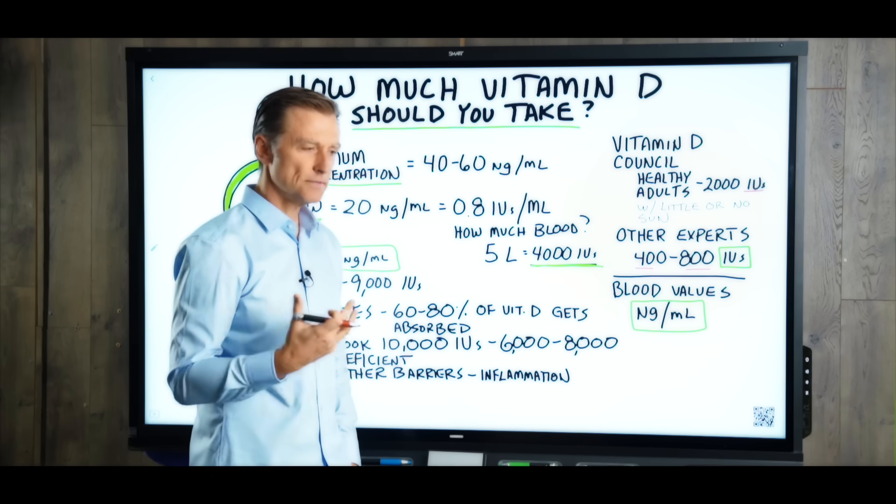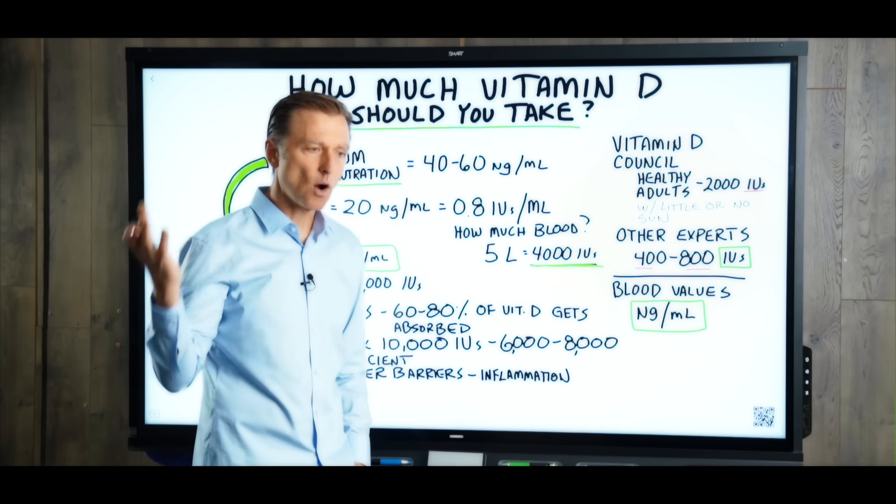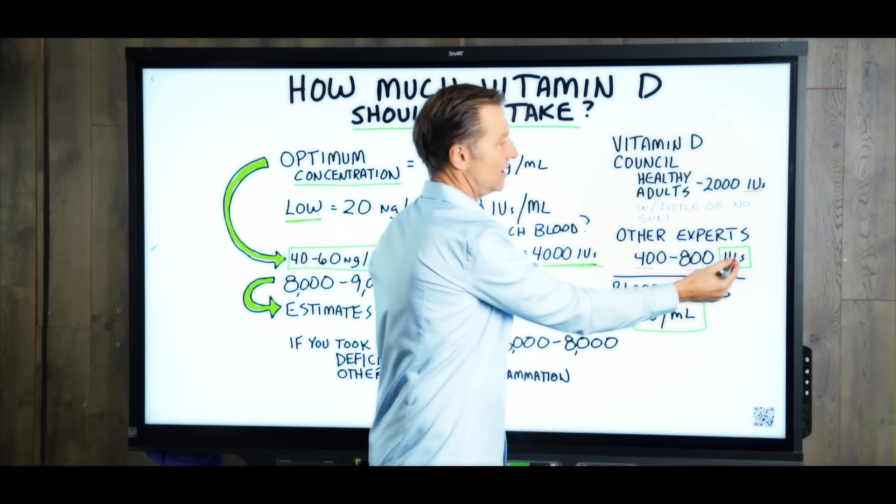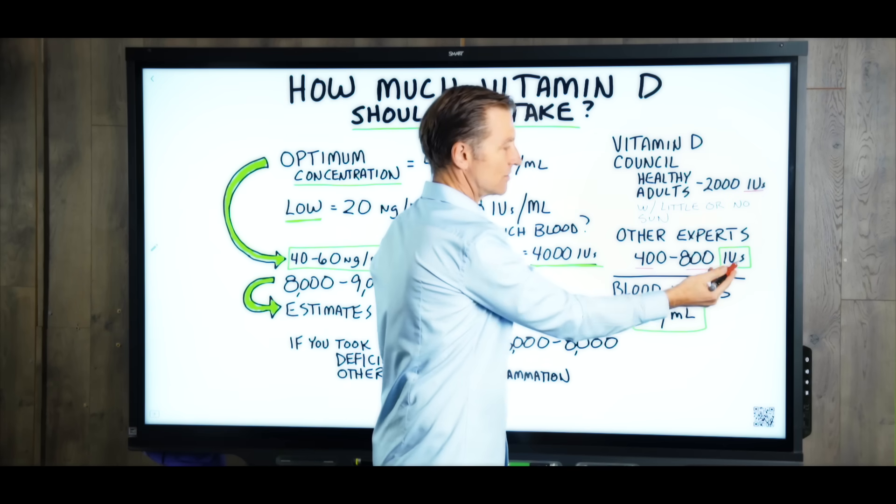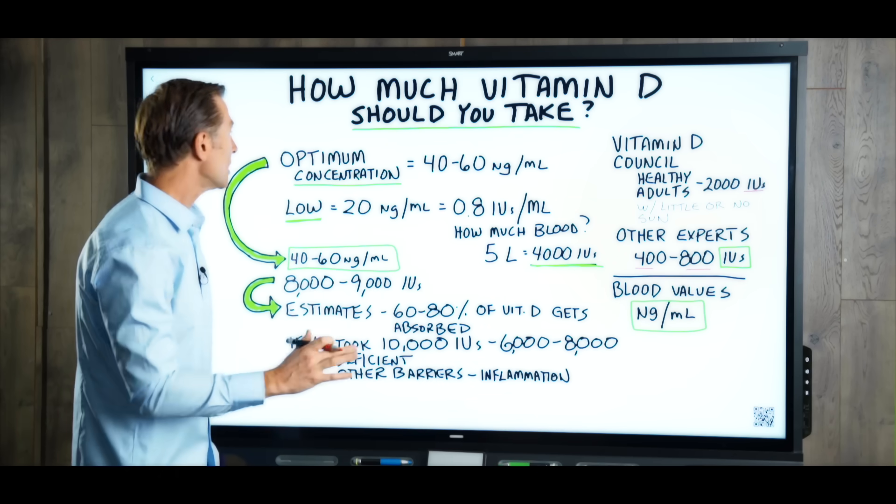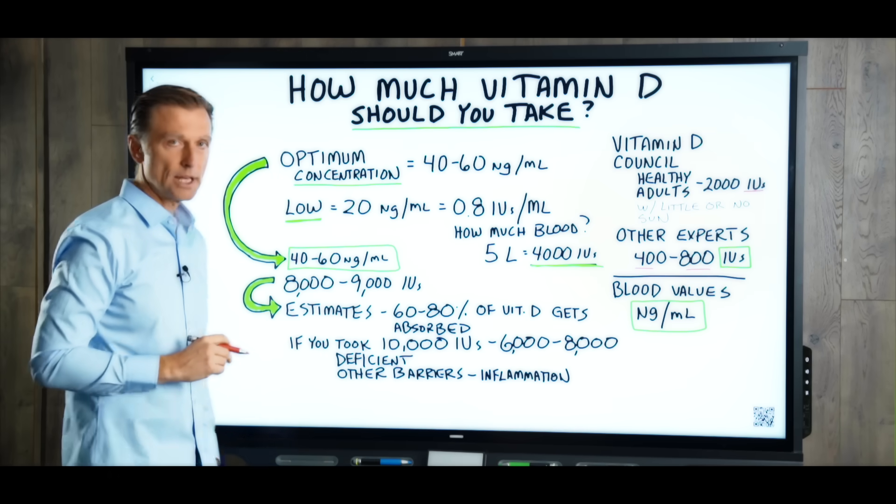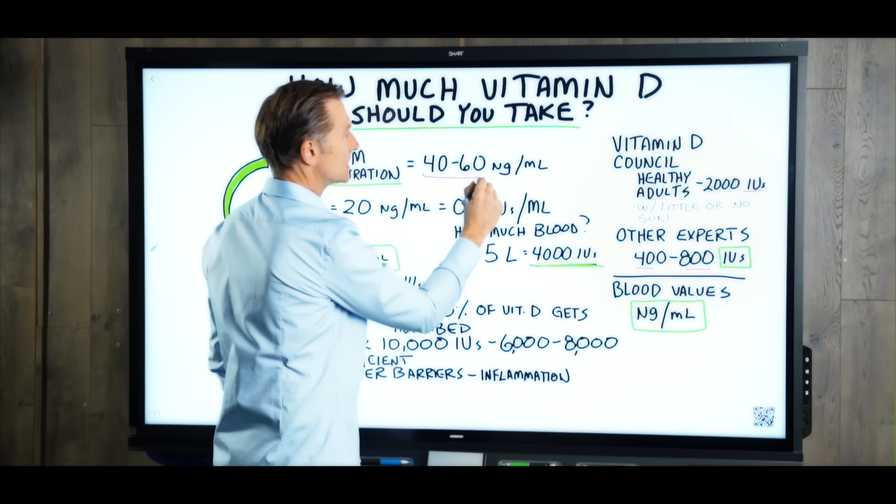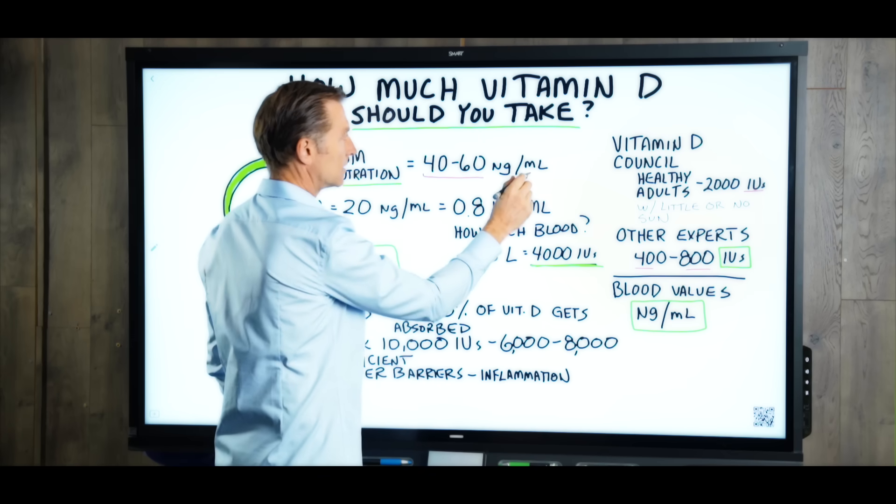So if you're deficient in your blood, how do we know how much vitamin D to take? Because the units in supplements are IUs. So it's kind of weird. I don't know why they do that. But if we take a look at the optimum concentration in your blood of vitamin D, it should be between 40 to 60 NGs per milliliter.